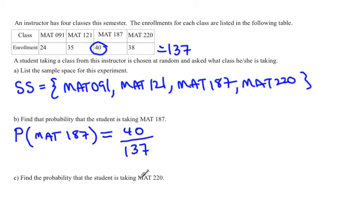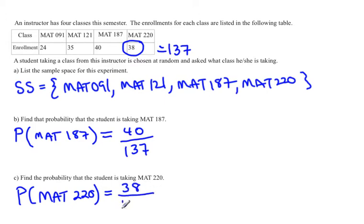The next question is to find the probability the student is taking math 220. So again write it in a mathematical statement first then go up to the top. Math 220 had 38 students in it. So the probability would be the 38 that were in that class out of the total of 137 students in the course.